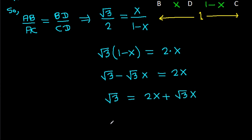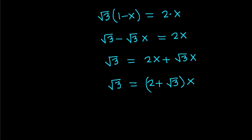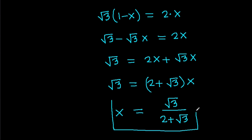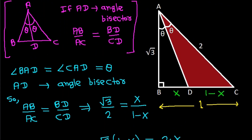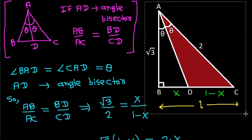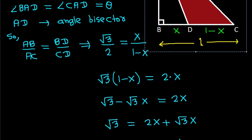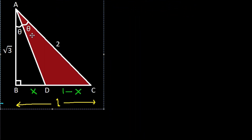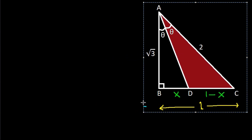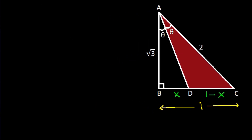Rearranging: √3 = 2X + √3·X = (2 + √3)·X. Therefore X = √3 / (2 + √3).